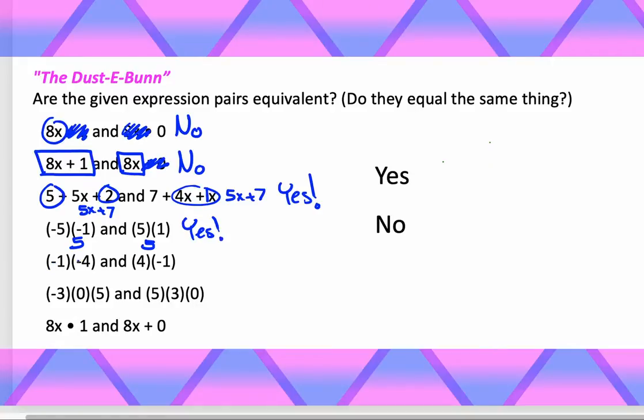There we go. We have negative 1 times negative 4. Negatives will cancel again. That's going to turn into a positive 4. 4 times negative 1. There's one negative. So it's going to stay a negative. So that's going to be a no. Those do not become the same number.